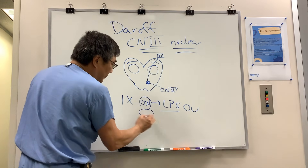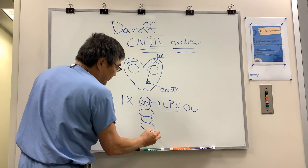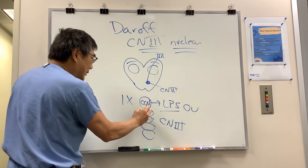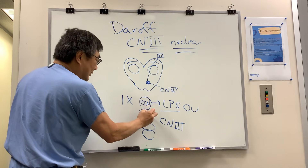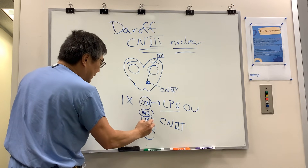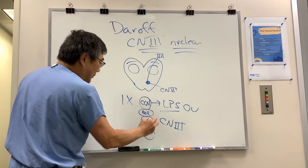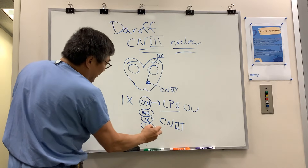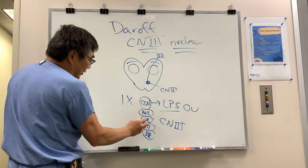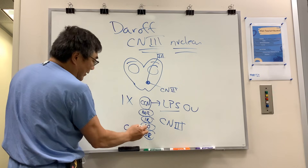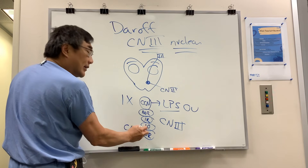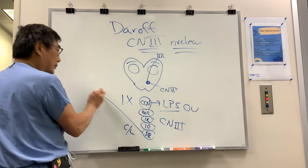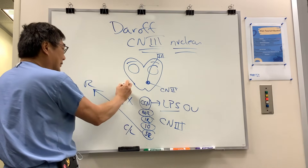The other muscles innervated by cranial nerve 3 all have sub-nuclei: medial rectus, inferior rectus, inferior oblique muscle, and superior rectus. The thing that's interesting about superior rectus is that it's contralaterally innervated — it's a crossed innervation, so it's the other side.